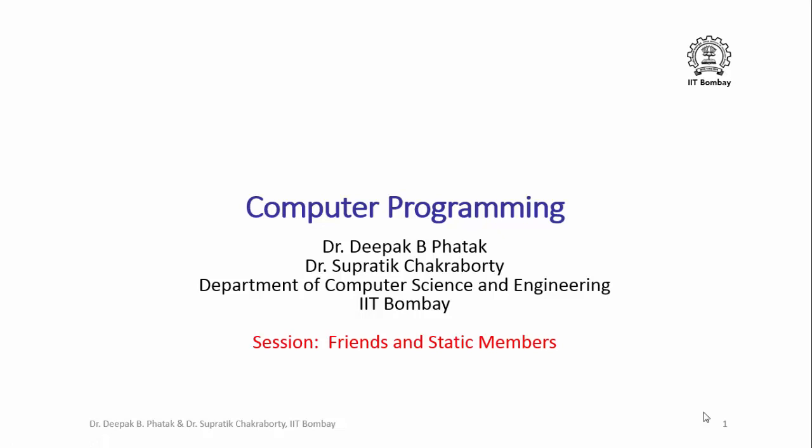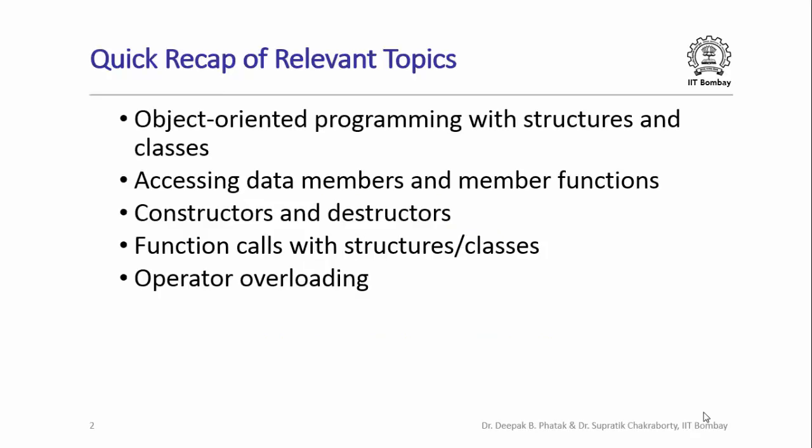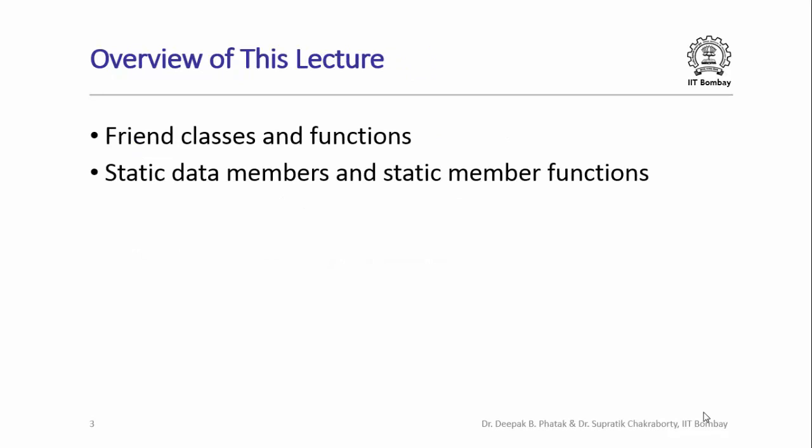Hello and welcome back. We are continuing our study of object oriented programming and in this lecture we are going to study about friends and static members. Here is a quick recap of some relevant topics we have already studied: object oriented programming with structures and classes, accessing data members and member functions, constructors and destructors, function calls with structures and classes, and operator overloading. In this lecture we are going to study about two additional features that C++ provides: friend classes and functions, and static data members and static member functions.